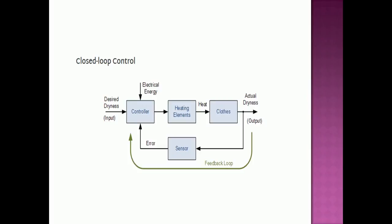Another example of a closed loop control system is a clothes dryer. The desired dryness is set as the reference signal at the input. The actual dryness of the clothes is fed back via sensors to the controller, and an error signal is generated. This error signal controls the heating element, which generates heat to dry the clothes. The actual dryness is continuously compared to the desired dryness and the process is regulated.